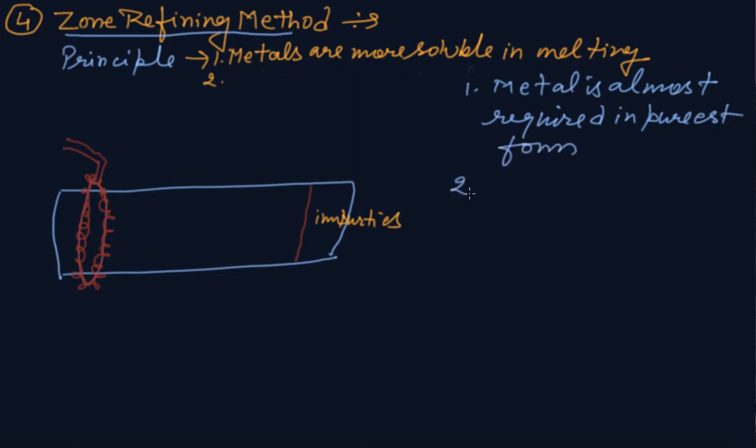It can be done for semiconductors: gallium, germanium, silicon, etc. In this one, it is taken in a jar, a big container. This is the metal in molten state and impurities.